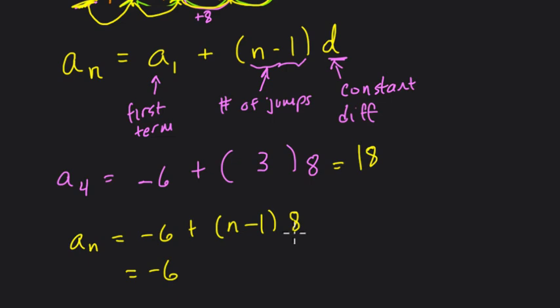Negative 6, here you use the distributive property. You have 8 groups of n and 8 groups of negative 1, negative 8. So a sub n equals 8 times n minus 14, which is exactly what we got.